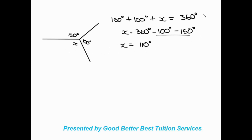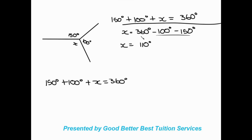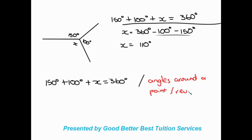Now remember, after you've made your statement you need to write your reason next to it. So the statement is: 150 degrees plus 100 degrees plus x is equal to 360 degrees. You write the reason either in brackets or separated with a forward slash. The reason is either angles around a point, or a revolution. Both are acceptable.